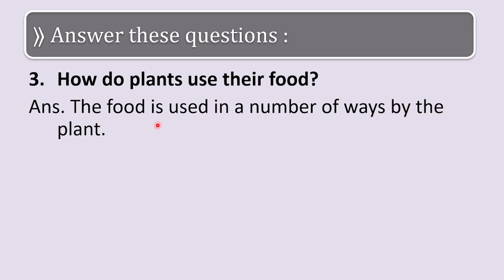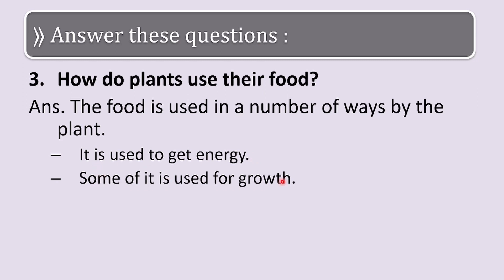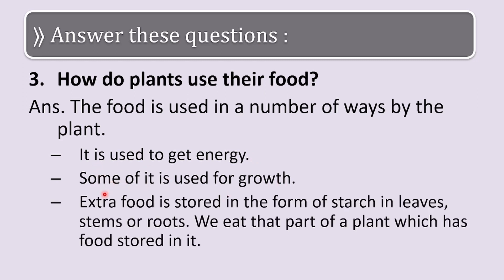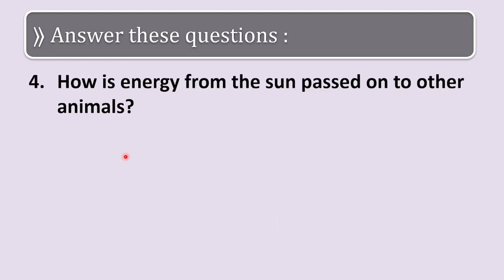Long answer Q3: how do plants use their food? The food is used in a number of different ways by plants. It is used to get energy, some of it is used for growth, and extra food is stored in the form of starch in leaves, stems, or roots. We eat the part of a plant which has food stored in it, and that starch gives us energy.